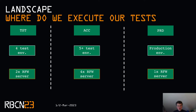Where do we execute our tests? We have three different domains where we run our tests. We have the test domain with four test environments and two Robot Framework servers. We develop our tests on that domain and also run regression tests. We have the acceptance environment with more than five different test environments and four Robot Framework servers, where we run our acceptance tests and also our regression tests. And finally, the production environment, where we run every hour a test using Robot Framework to check the performance of the GUI.